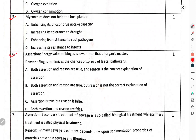Question number 6 — Assertion: The energy value of biogas is lower than that of the organic matter. Reason: Biogas minimizes the chance of spread of faecal pathogens.